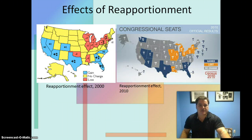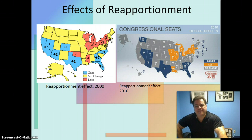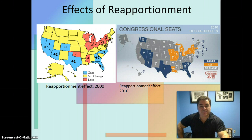I want to show you a pair of maps — one reflecting the effects of reapportionment from the 2000 census, and one from 2010. What trend is evident from looking at the reapportionment maps from 2000 to 2010? Answer that in the Google Doc and explain your answer. You might want to talk about what areas of the country are benefiting from population shifts and what areas aren't, and whether there are detectable trends over the past 20 years.